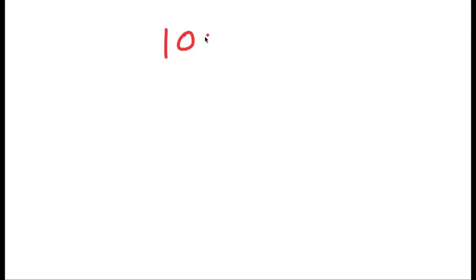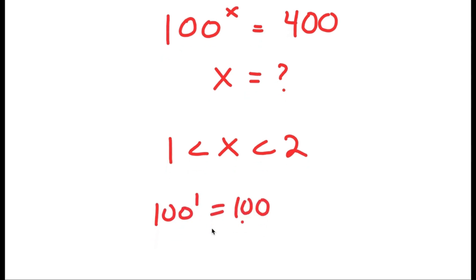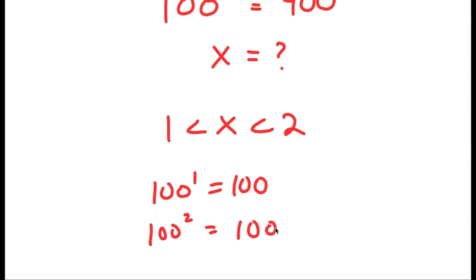In this video, I'm going to solve an interesting exponential equation. My equation is 100 to the power of x is equal to 400. We can see that x is going to be in between 1 and 2, because 100 to the power of 1 is 100 and 100 to the power of 2 is 10,000. So it's going to be more closer to 1 than to 2, but somewhere in the range of 1 and 2.